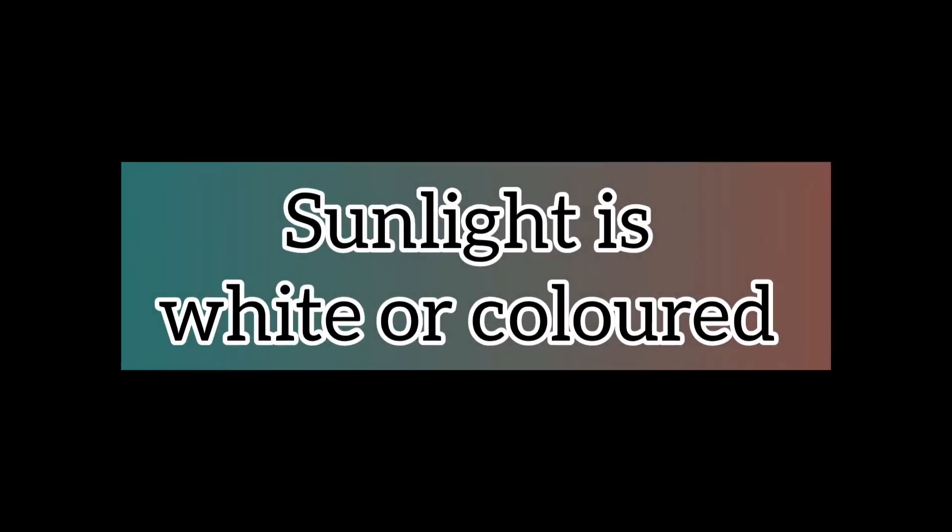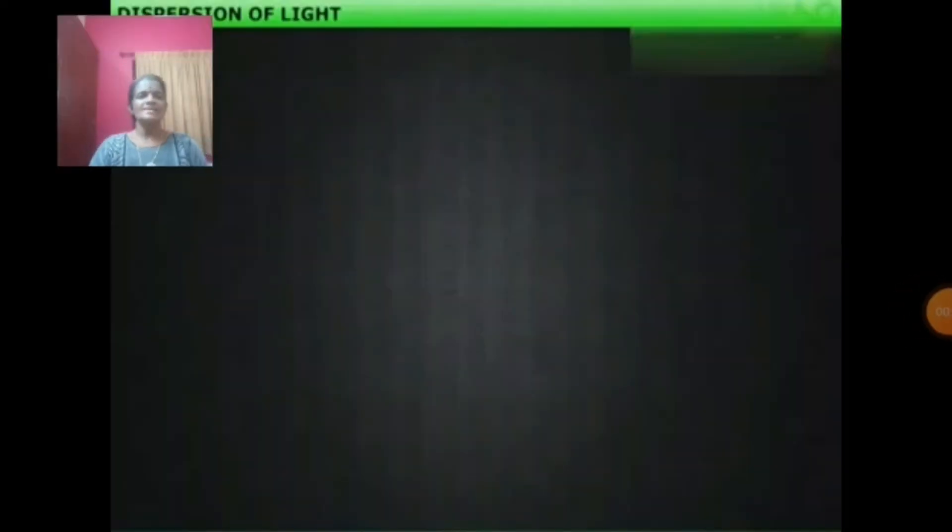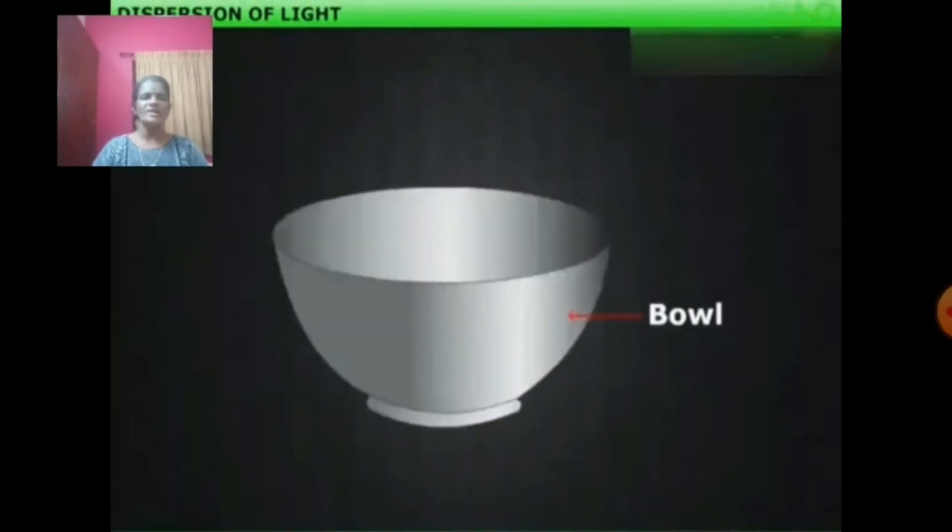Sunlight is referred to as white light. That is, it consists of 7 colors. Here is another activity showing that sunlight consists of several colors. Let us understand the dispersion of light with the help of an activity. Take a bowl, then place a plain mirror strip of suitable size into the bowl and pour water in the bowl.